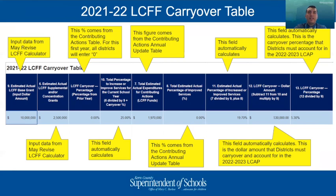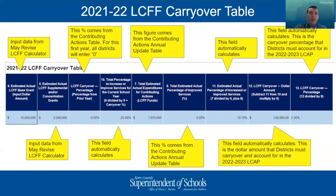The fourth field is the total percentage to increase or improve services for the current year. This field automatically calculates by taking your estimated actual supplemental and concentration grants, dividing that total by the estimated actual base grant, and then adding prior year carryover. In the example on screen: 2.5 million divided by 10 million plus 0% carryover results in 25%. The fifth field is total estimated actual expenditures for contributing actions — it totals the estimated actual expenditures for all actions that contribute to increasing and improving services, pulled directly from the contributing actions annual update table. Estimated actual expenditures should reflect amounts your district truly expects to incur by the closing of the books.